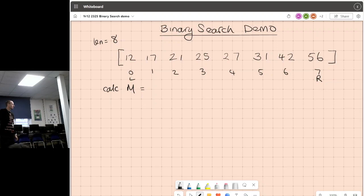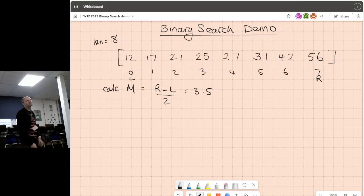What is the formula for calculating the middle? Divide what by 2? The length by 2, no, that won't work. R minus L? So we subtract our L from R, yeah? So in this instance, that gives us 7, and then divide it by 2. So we get 7 over 2, which gives us 3.5. Our first dilemma.